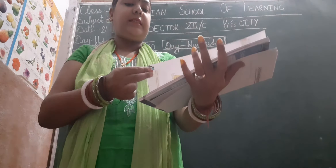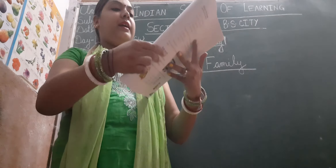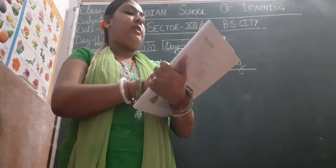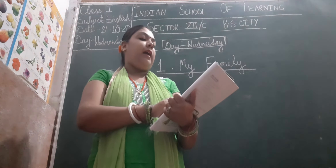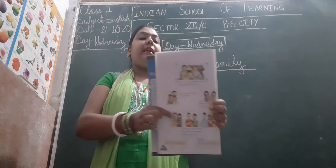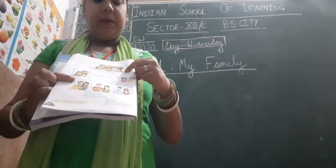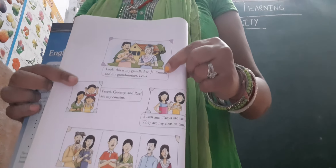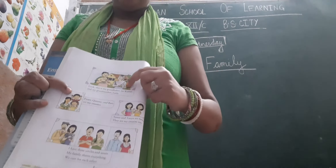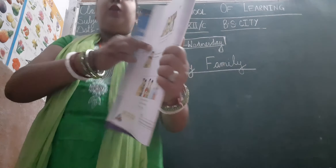Turn to page number 10. Is page mein ye hue hain aur family members ke baare mein. This is my grandfather Jay Kumar and my grandmother Lila. Ye hain mere grandfather. His name is Jay Kumar. Ye Anya ke dada ji hain jinaka naam hai Jay Kumar aur ye unski dadi ji hain jinaka naam hai Lila.